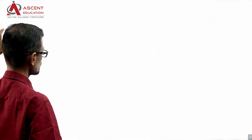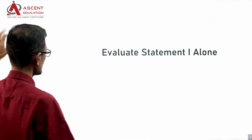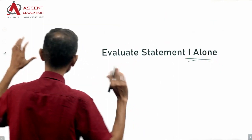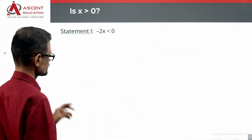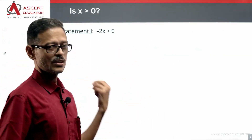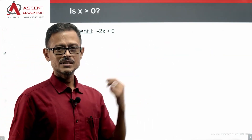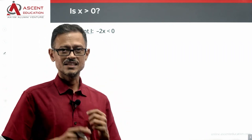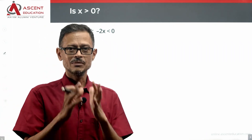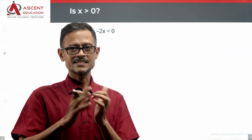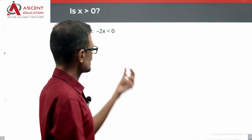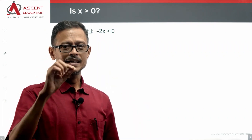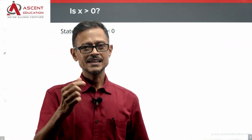Start by evaluating statement one alone — don't even look at statement two. The question is: is x greater than zero? Statement one gives us: minus 2x is less than zero. We need to work out what this tells us about x.